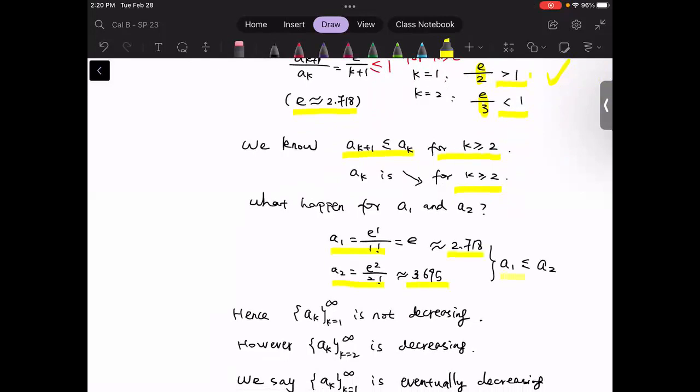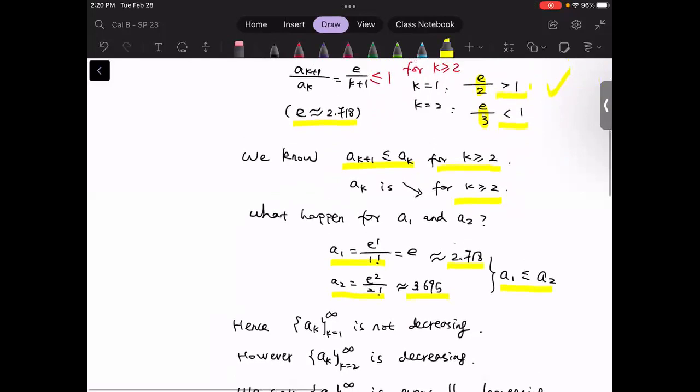then we see the a_1 is less than a_2. After the second term, the sequence is decreasing. So in terms of pictures, we have something like, this is a_1, this is a_2, and then a_3 starts to decrease.